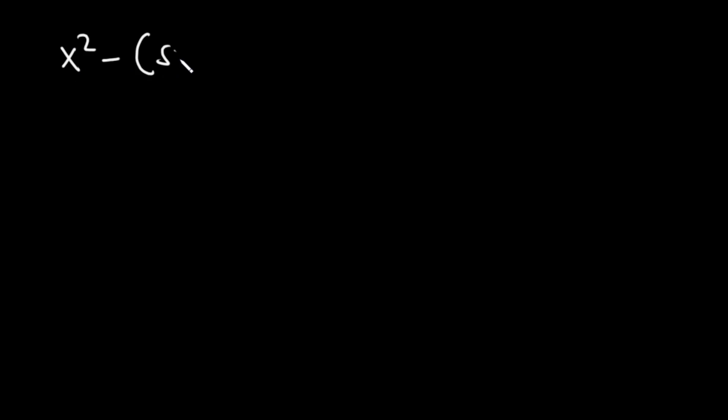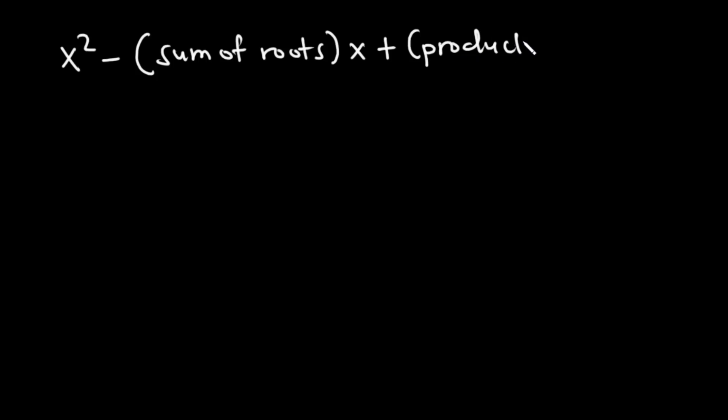In this video, we are going to learn how to form a quadratic equation when its roots are given. Given the roots of any quadratic equation, the equation can be written as: x squared minus sum of roots times x plus product of roots is equal to zero.